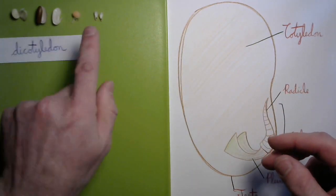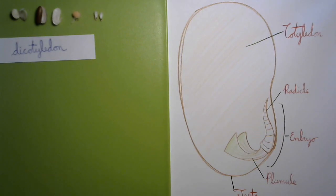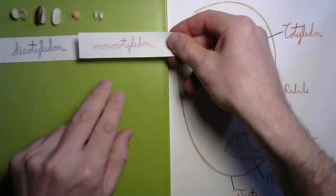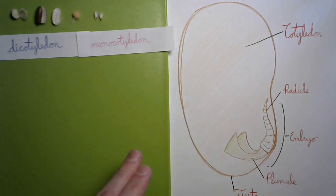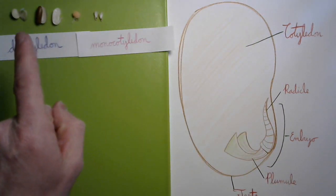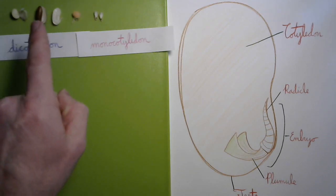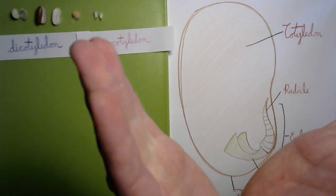But if it only has one, like our corn did, it's a monocot or a monocotyledon. It only has one of those food pouches, and you'll see one of something else with those, whereas you'll see two of something with those once they sprout.